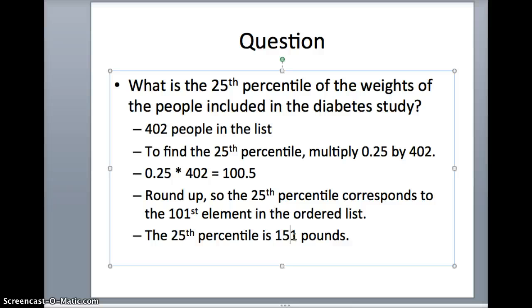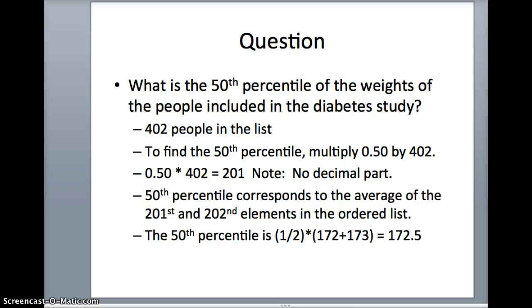Let's take a look at one more example. This time I'm going to ask, what is the 50th percentile? There are still 402 people in the list. To find the 50th percentile, I'm going to multiply 0.50 by 402. Half of 402 is 201. You will notice that this is different. 201 is a whole number. It is an integer. It does not have a decimal part.